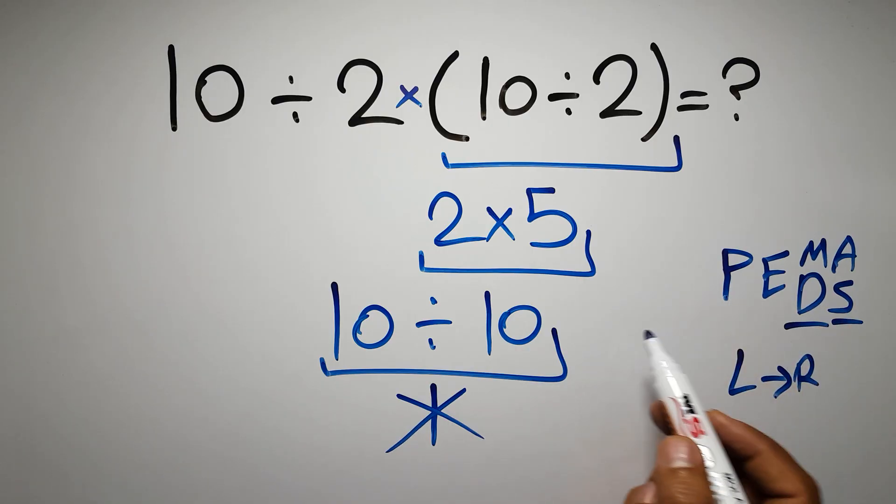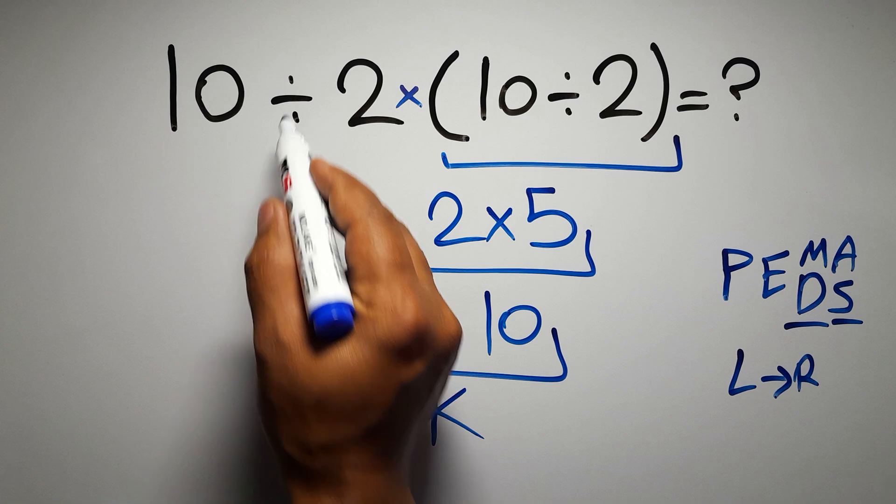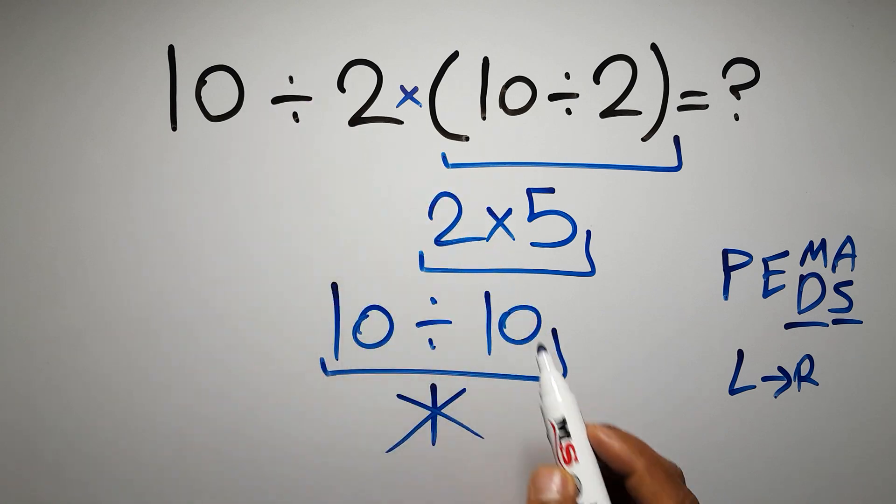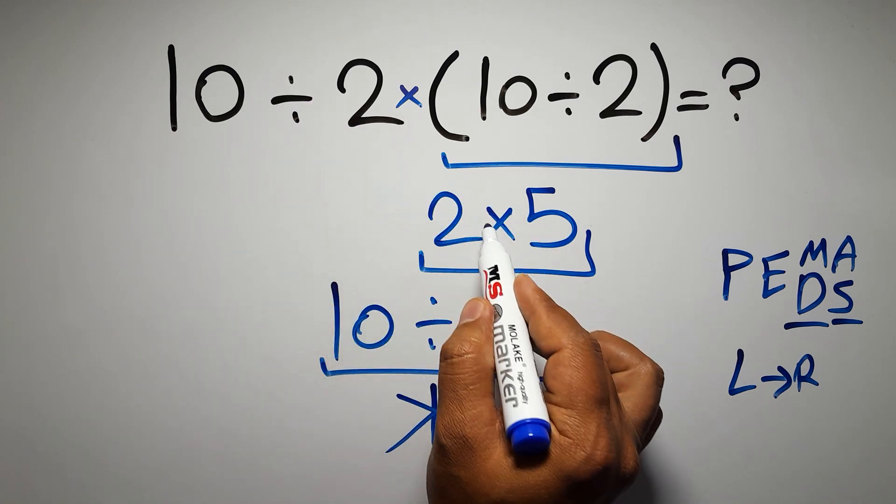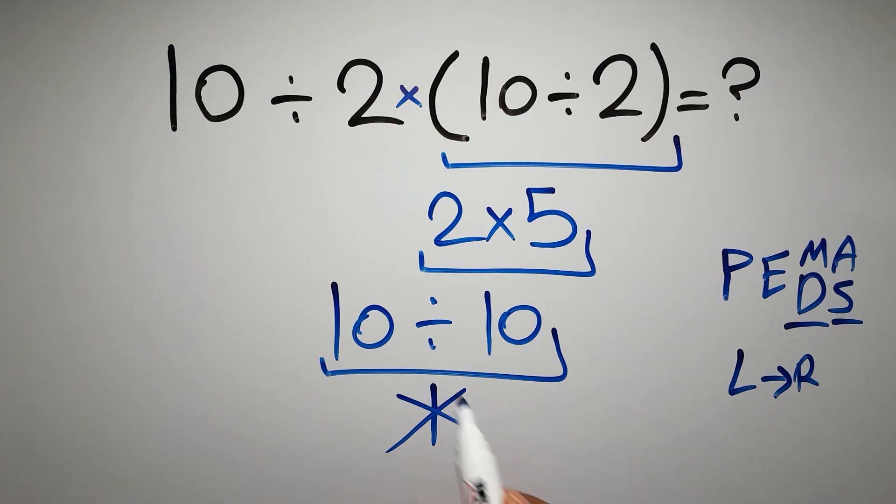So according to the PEMDAS, first we have to do this parentheses, then this division, and finally this multiplication. If we do this multiplication before this division, it is wrong.